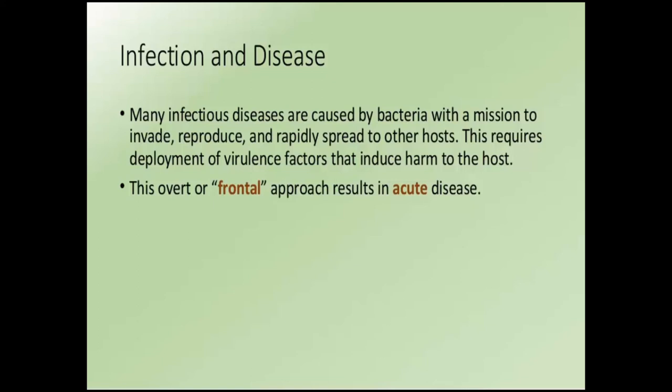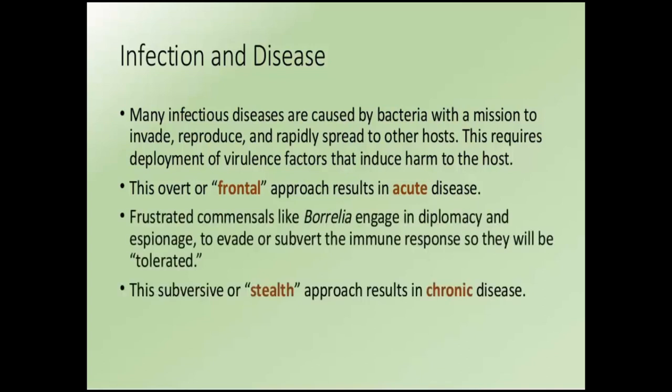However, that is one approach. There are other commensals — particularly frustrated commensals like Borrelia — that use a diplomacy and espionage approach because they want to be commensals. What they're trying to do is evade or subvert the immune response to get themselves tolerated. This very subversive approach is referred to as stealth pathogenicity — a stealthy approach that can result in chronic disease, as has been well established with other types of stealth bacteria such as Bartonella and Coxiella.